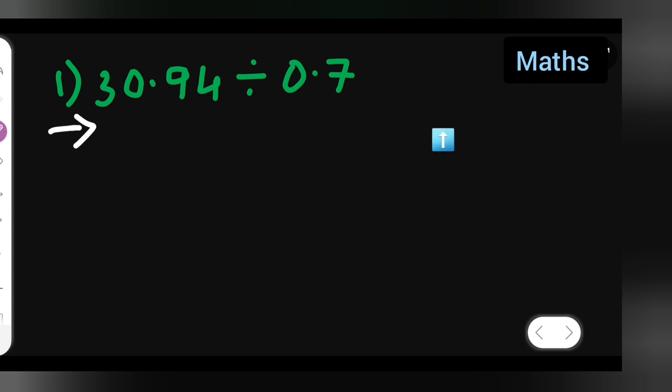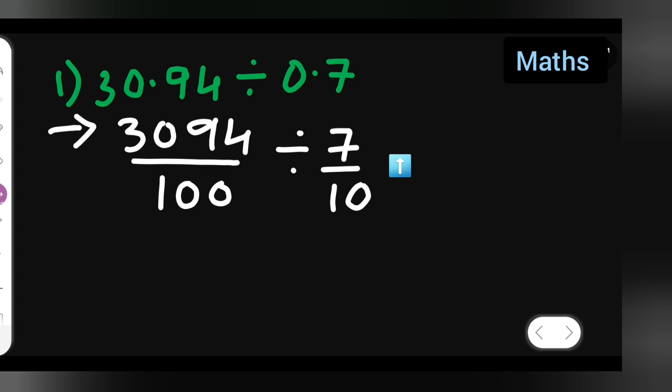First, remove the decimal point to get 3094. The decimal point is in the 100th place, so there will be two zeros: divide by 100. For 0.7, the decimal point is in the 10th place, so it becomes 7 upon 10.